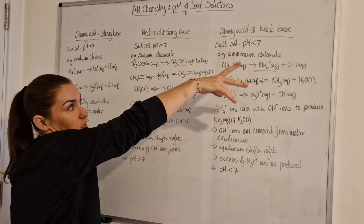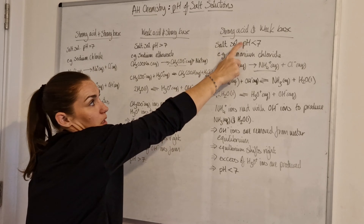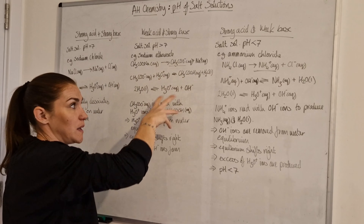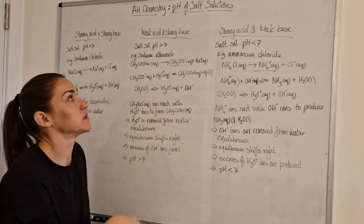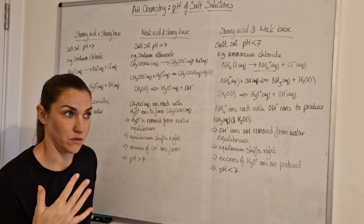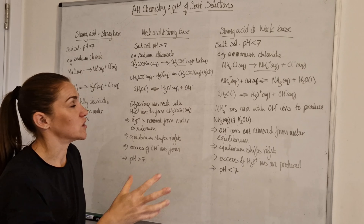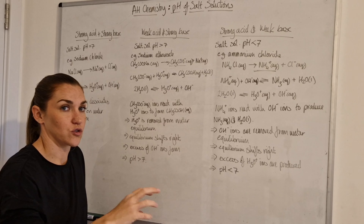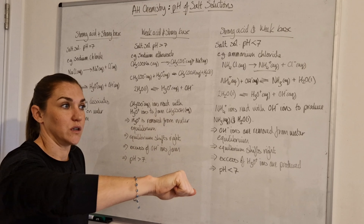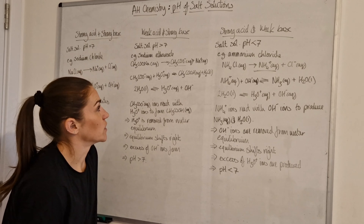For the strong acid and weak base combination, the acid is stronger and pulls the pH below seven. So even if you can't remember the equilibrium reasoning, you can remember the tug of war concept — whichever is stronger wins and pulls the pH to its side of seven. It's always the weak component that causes the disruption to the water equilibrium.